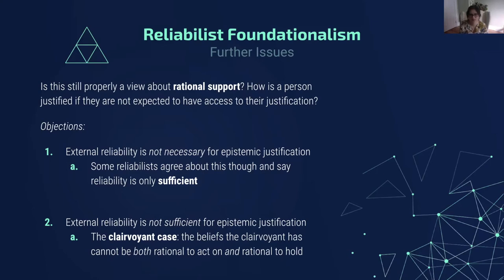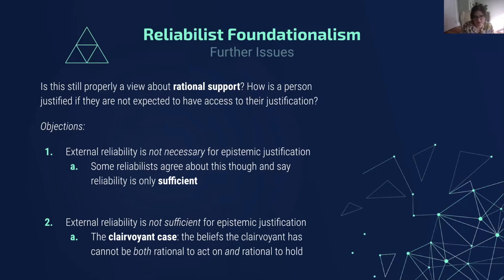Here are some objections. External reliability is not necessary for epistemic justification. According to some people, the problem is we don't need reliable belief-forming processes in order to have epistemic justification. The internalist will think what is necessary is my access to information, and sometimes I won't have a reliable process connecting me — I won't have well-foundedness — but I'll still have epistemic justification. Some reliabilists agree: there's a kind of mixed reliabilist that says it's not necessary for epistemic justification, but if you have reliability, it's sufficient for justification, and that's good enough.